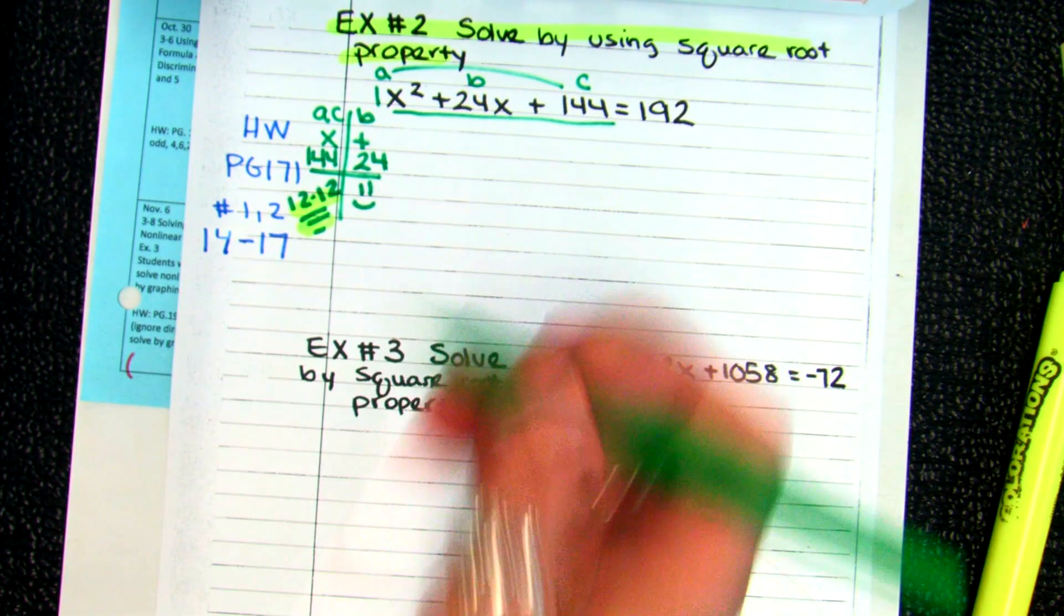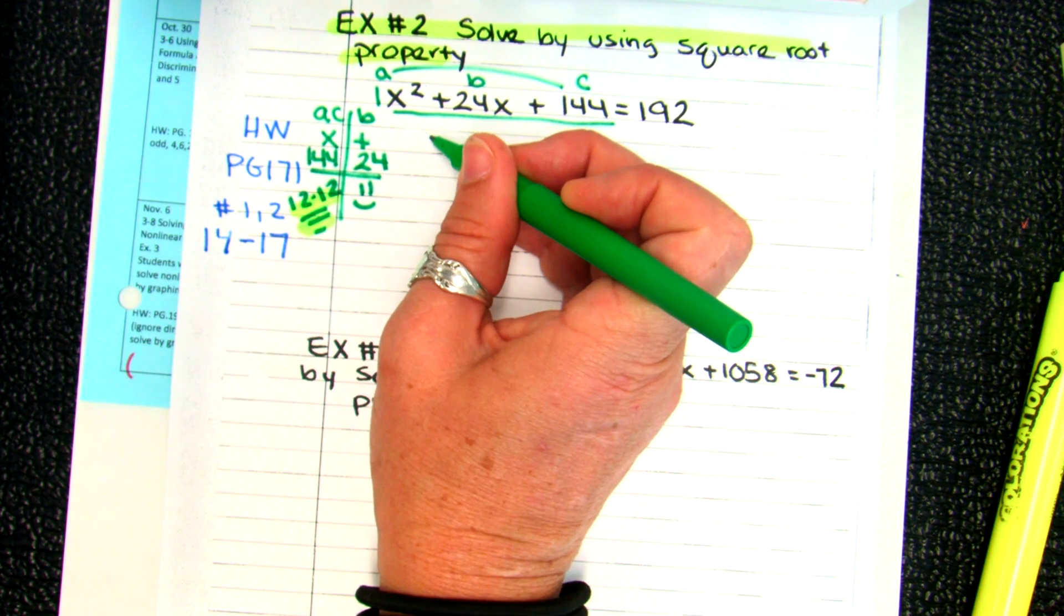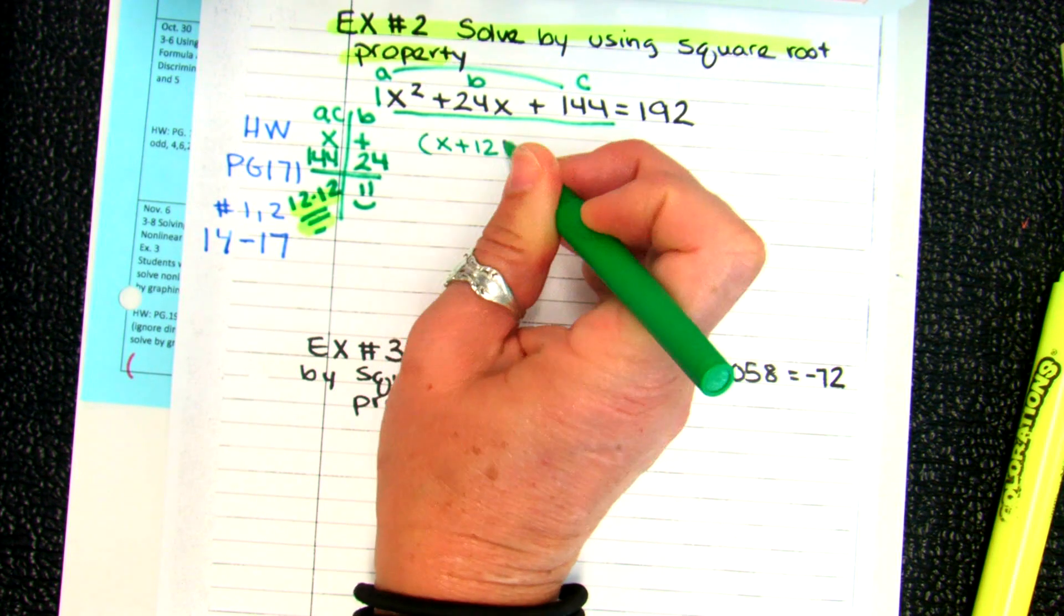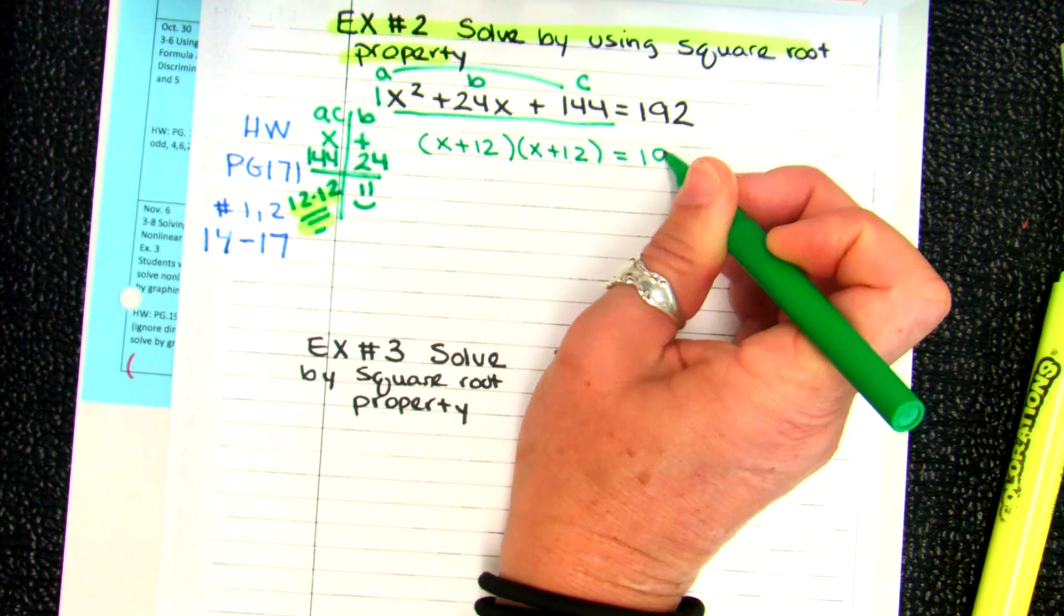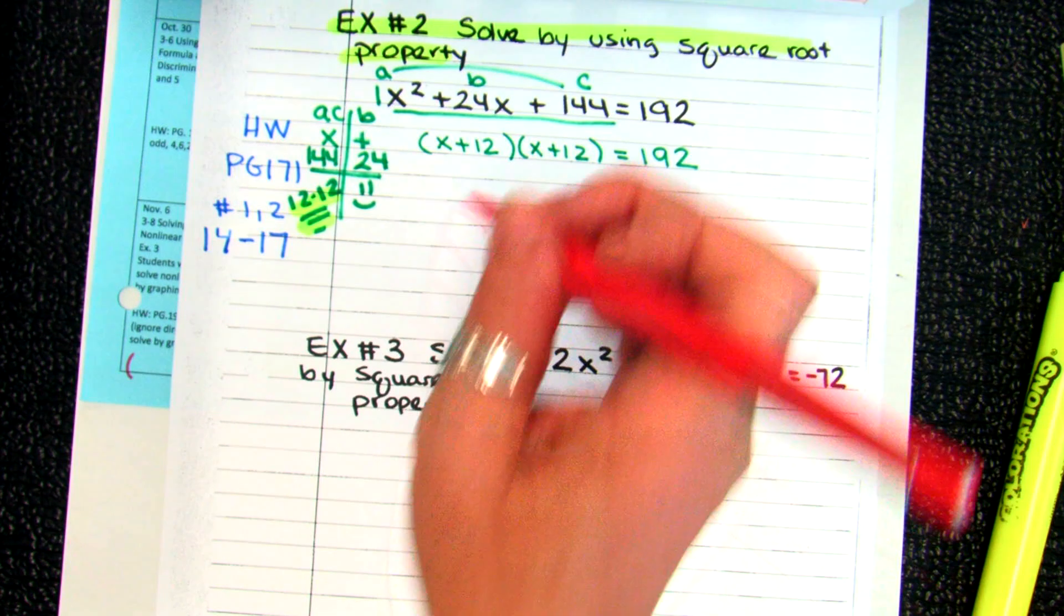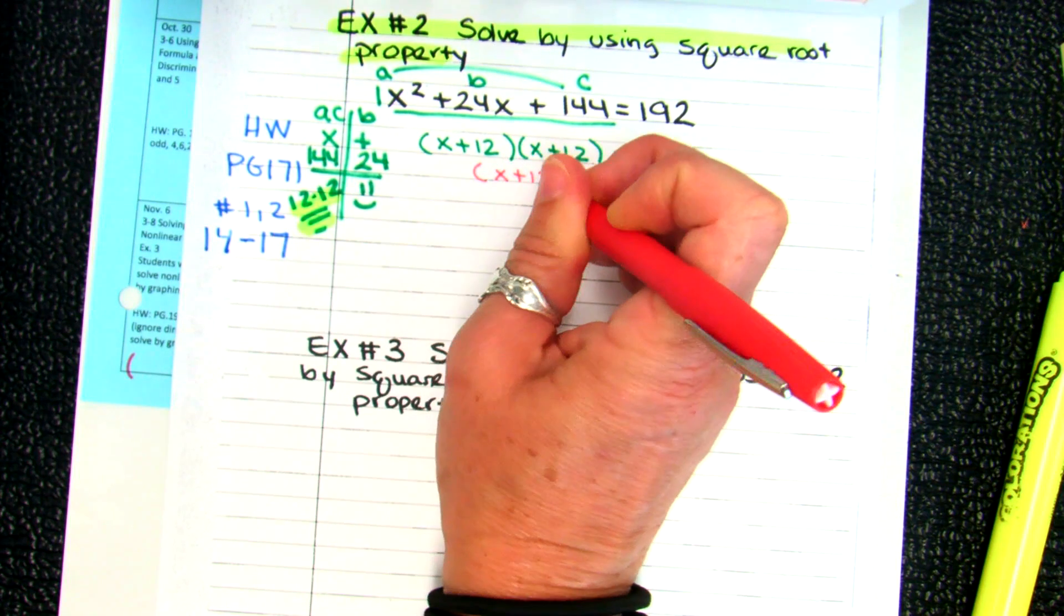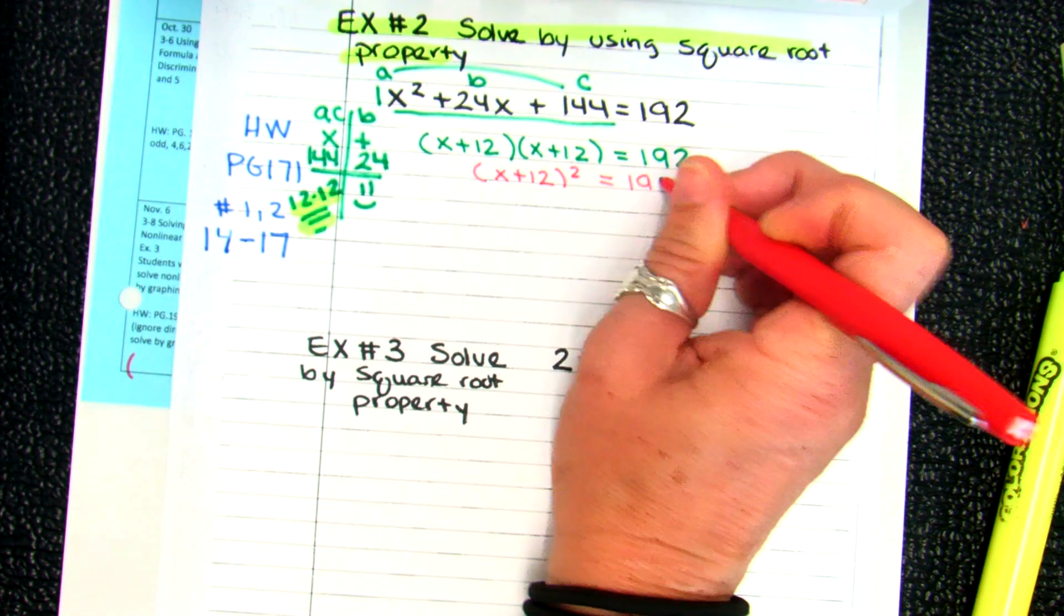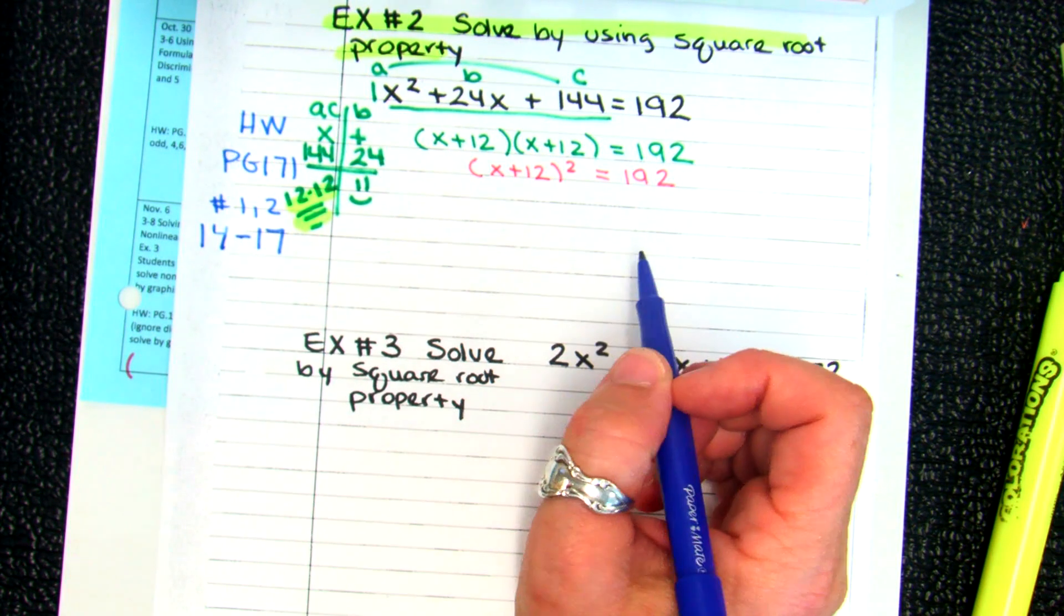Those are called my magic numbers. Now we're going to go ahead and factor. Waylon, what would be my factors? Good. So how do I write it as factors? X plus 12 and X plus 12, both in parentheses. Beautifully done. And then there's another way to write that. Juan, how could I write this a little differently? X plus 12 squared. Good. I love to see your smile, too. Now we've got squared on the left-hand side. Isaac, how would you go ahead and solve if it's squared?